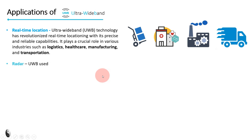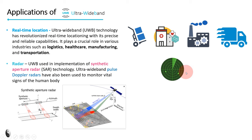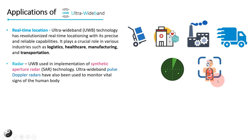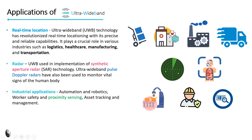In manufacturing, ultra-wideband streamlines inventory management and enhances production efficiency through accurate tracking of materials and tools. The next main application is radar. UWB is used in implementation of synthetic aperture radar (SAR) technology — a form of radar used to create two-dimensional images or three-dimensional reconstructions of objects such as landscapes. In healthcare, ultra-wideband pulse Doppler radars have also been used to monitor vital signs such as heart rate and respiration, as well as human gait analysis and fall detection.